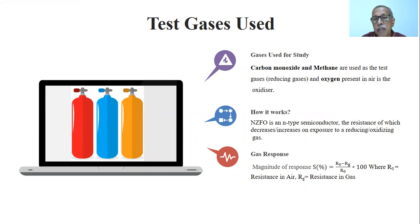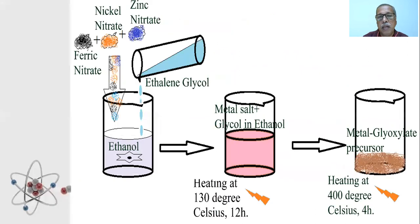When the material is exposed to the test gases, the resistance decreases to a minimum value and on exposure to the oxidizing gas, the resistance returns to the initial state. The response magnitude is defined as S equals R0 minus Rg divided by R0, where R0 and Rg are the resistance in air and test gas.